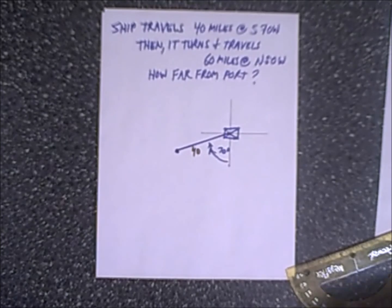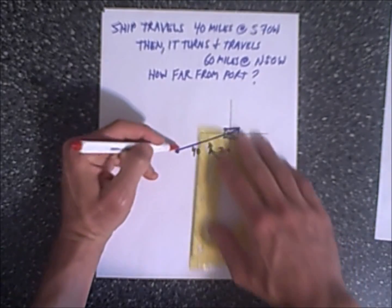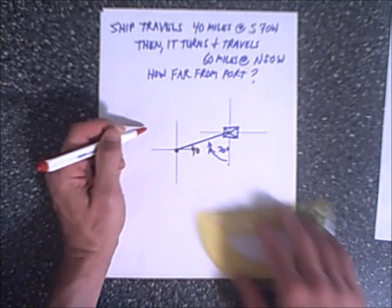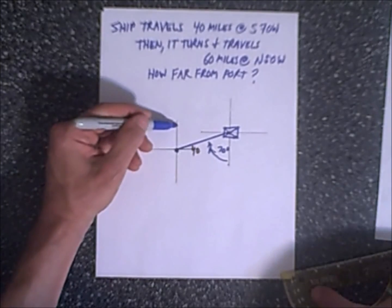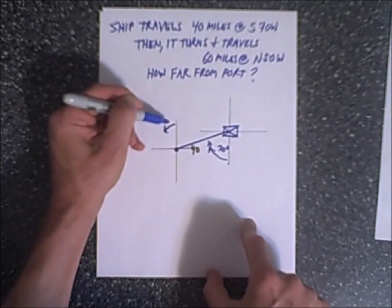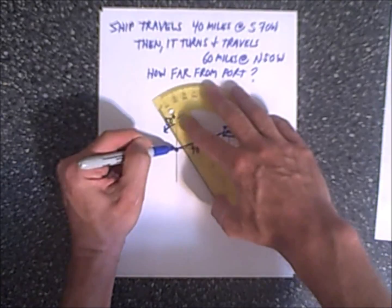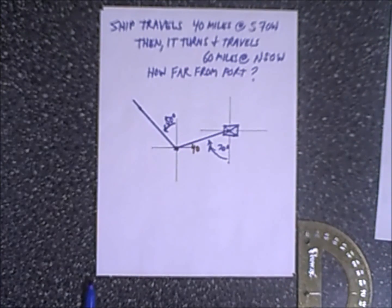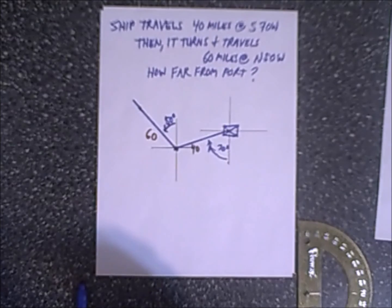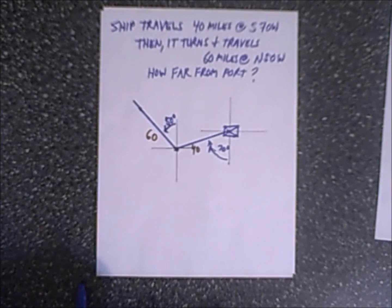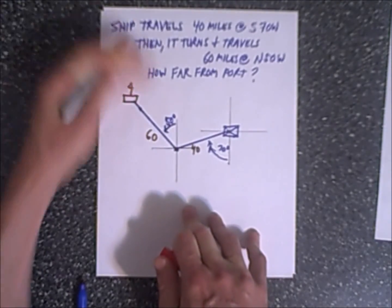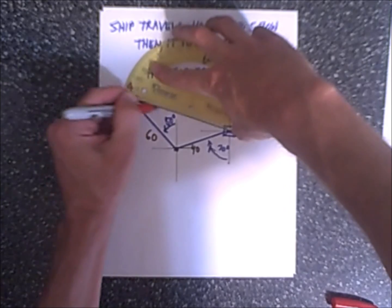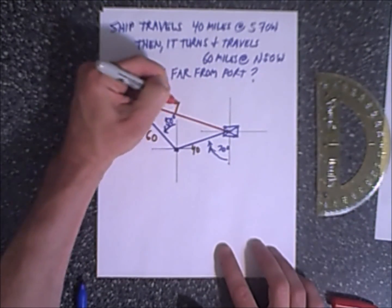Then it turns and travels 60 miles north 50 west. So again we're starting at a new point. So let's draw a second grid. Again north, south, east, west, so we have our reference point. These are the same and now the ship has traveled north 50 degrees west. This is 50 degrees and so it looks something like this and it's gone 60 miles. So this is 60 miles and the question is asking how far from the port. So like the other example we have a ship that is right here and the port is over here and we're looking for the distance from this ship to this port.